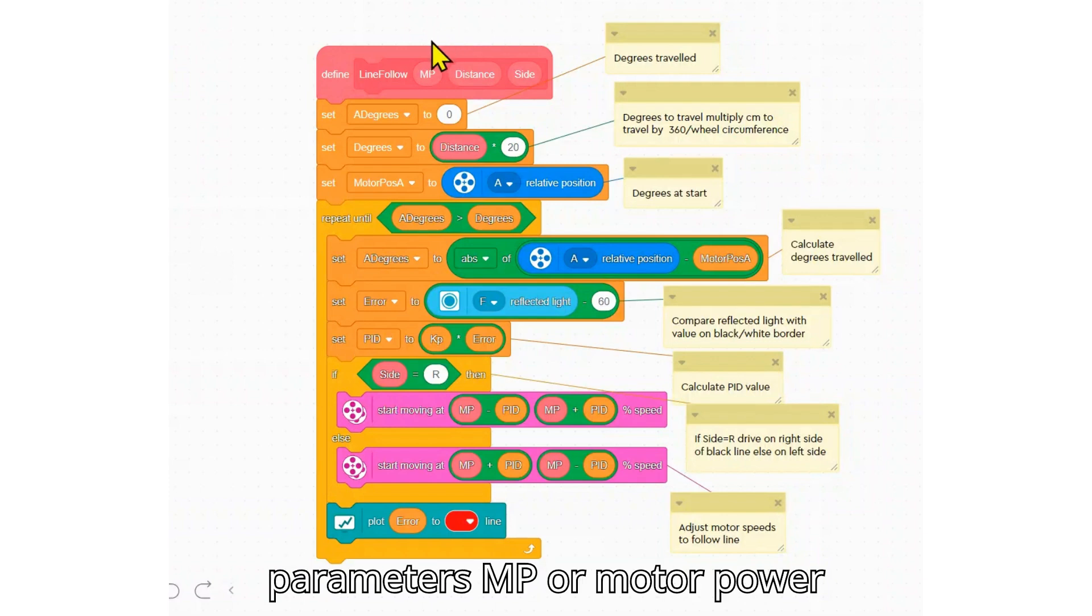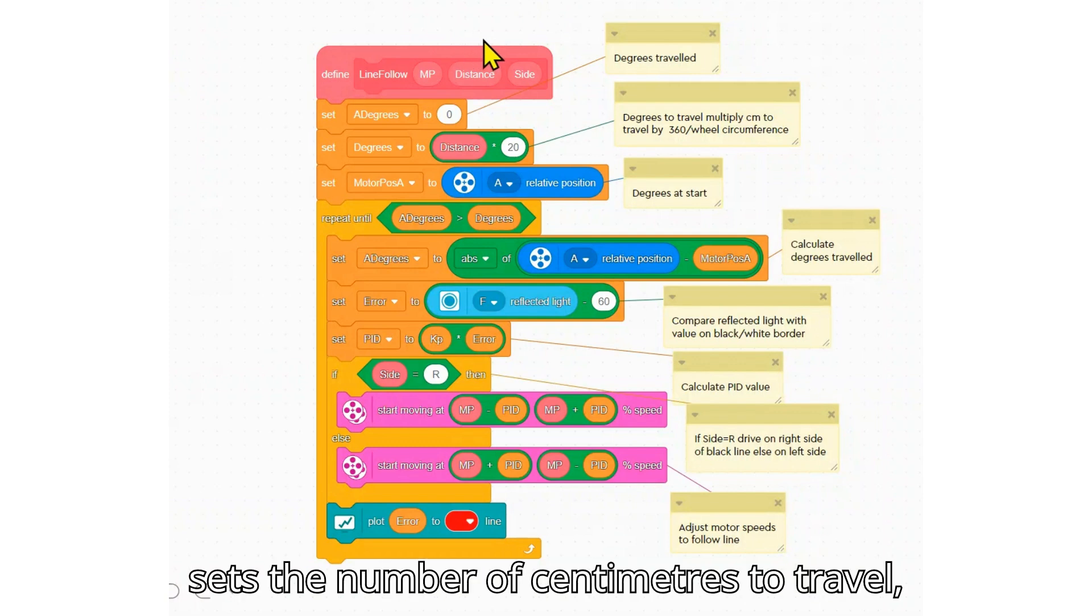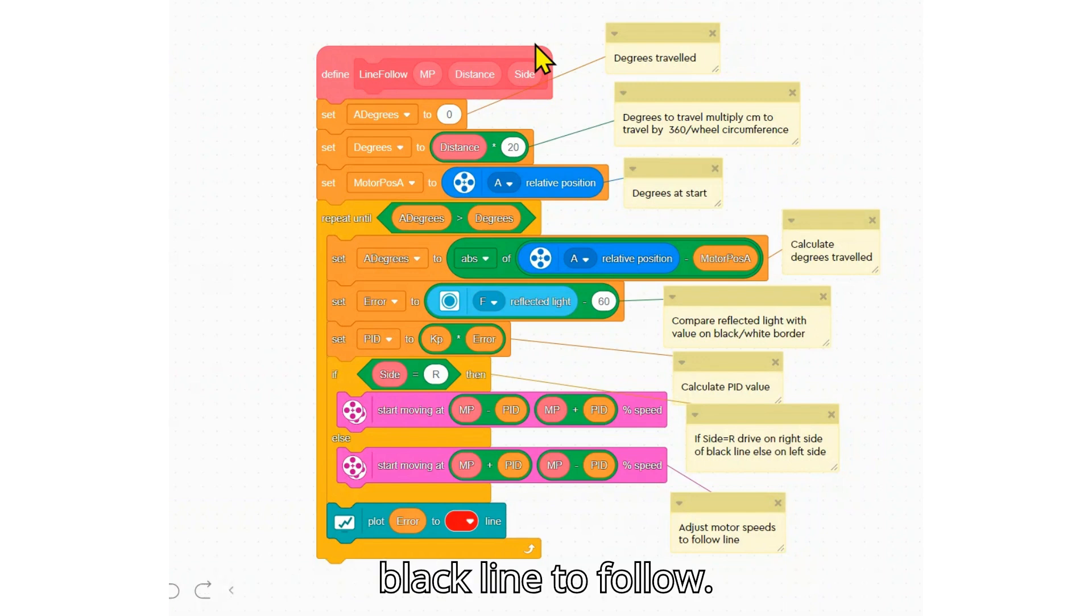MP or motor power which sets the speed. Distance which sets the number of centimeters to travel. And side which defines which side of the black line to follow.